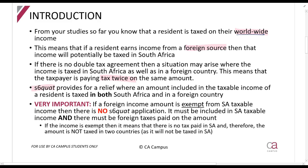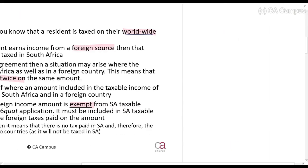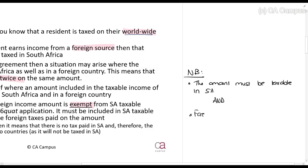Section 6quat is there to provide relief for that situation. Very importantly, if an amount is exempt from South African tax - for example, a foreign dividend which is 100% exempt - even if you are paying tax in a foreign country, Section 6quat does not apply. The two requirements that must both be met are: the amount must be taxable in South Africa, and foreign taxes must have been paid.